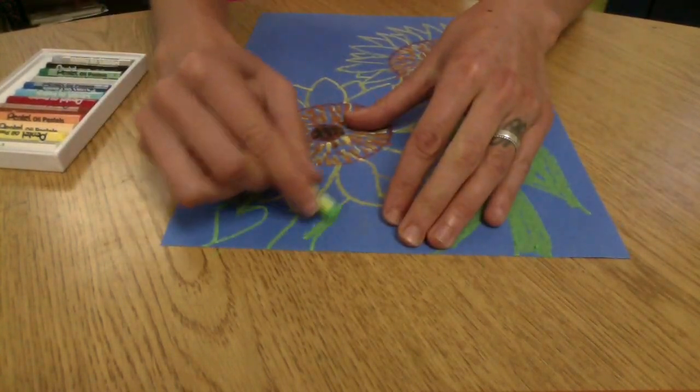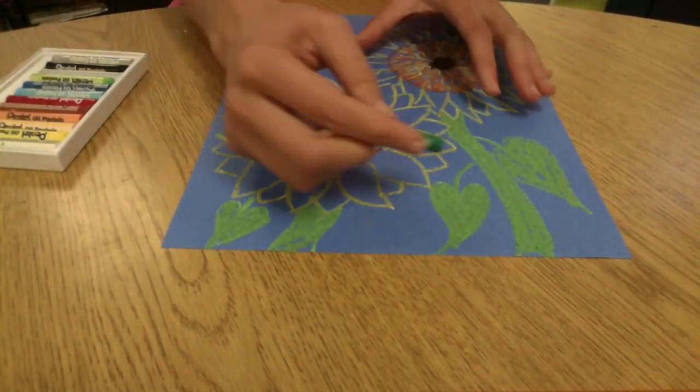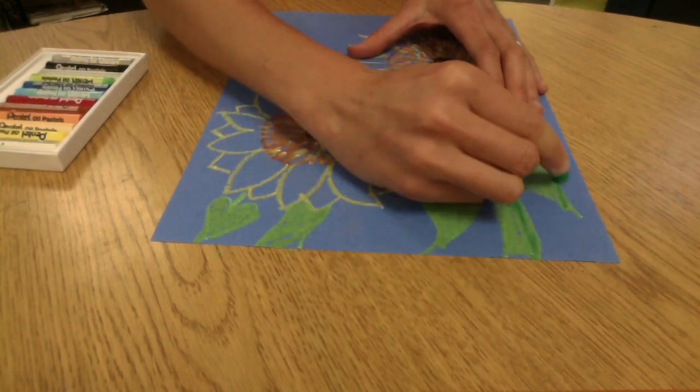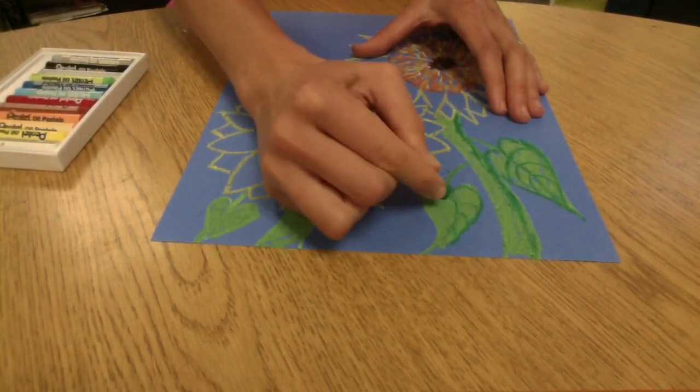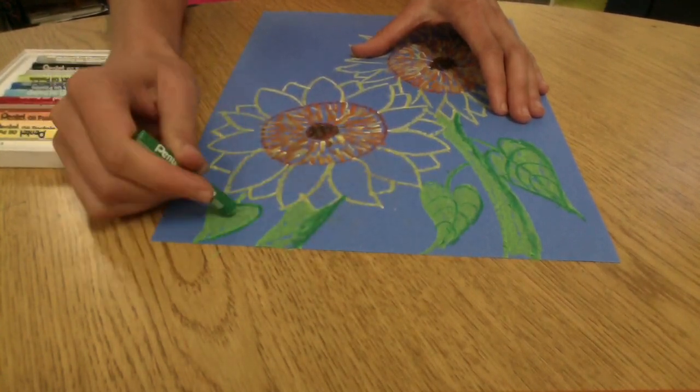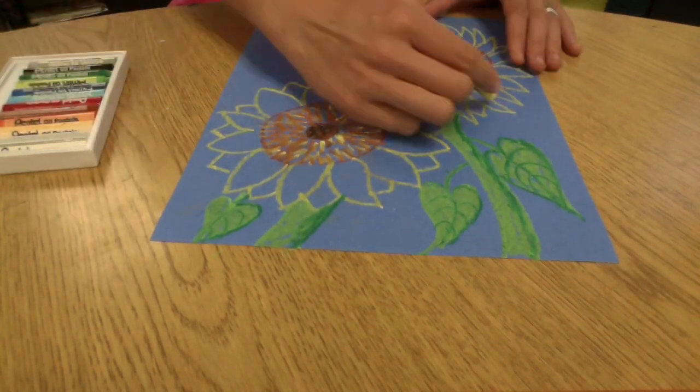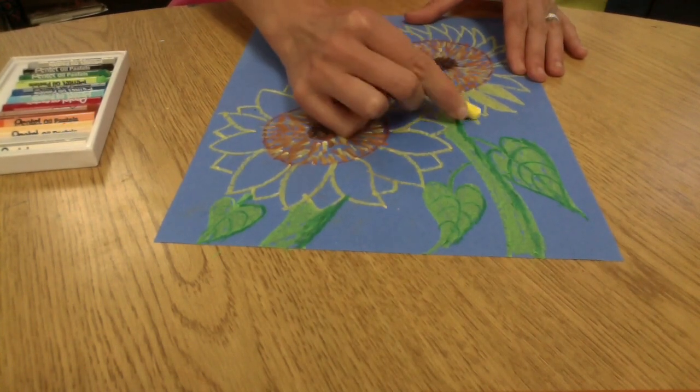Then I drew a nice thick stem and big heart-shaped leaves, and that's what sunflower leaves look like. Now I'm going to get fancy and add a little shadow to one side of my stem, dark green, and some veins inside those leaves.